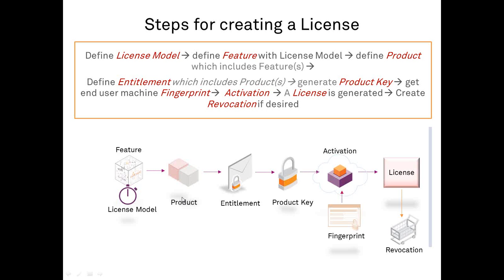Whenever a customer wants to buy my application as a software vendor, I create an entitlement for them. The entitlement means this customer is entitled to get a license from me. To simplify it, each entitlement is for each customer. If a customer calls and says they want a license for Excel, I create an entitlement, put inside it the Excel product that fits them, and then generate it. A product key is generated — a string that identifies the entitlement and the product with features inside it — and I provide this product key to my customer.